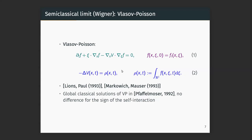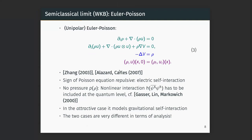There is a famous paper by Pfaffelmoser and Mauser who proved global classical solutions of Vlasov-Poisson regardless of sign, because if you change a sign you get the gravitational setting. If you use a WKB ansatz, you arrive at Euler-Poisson — an Euler equation again coupled to a Poisson equation for the potential. Note that there is no pressure in the Euler equation derived purely from Schrödinger-Poisson. If you want a pressure term, you have to include a nonlinear interaction term in the Schrödinger equation.